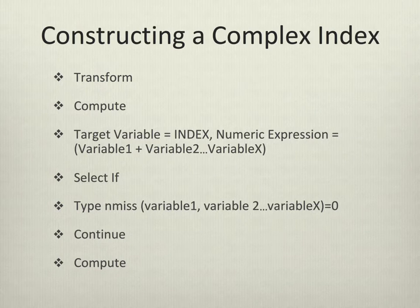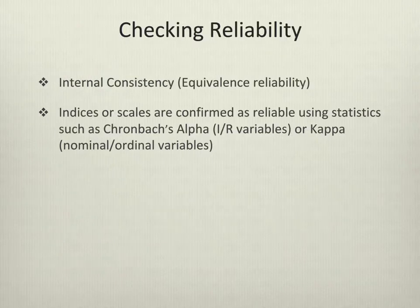In Lab 8, we constructed a count-based index. You can also create an additive index by simply adding variables together. To confirm that you have reliability in your index or scale, as was done with the Rosenberg Self-Esteem Scale, you would use the appropriate test statistics such as Cronbach's alpha — which is appropriate for interval-ratio level variables being made into scales — or kappa, which is appropriate for nominal or ordinal variables being used in scales.